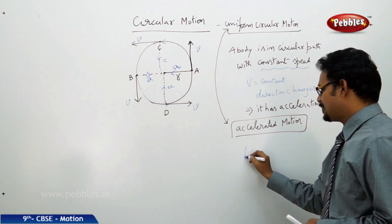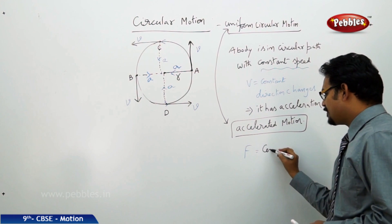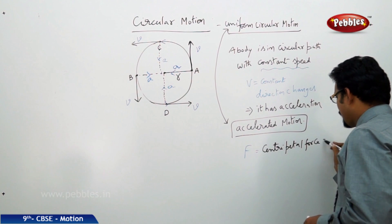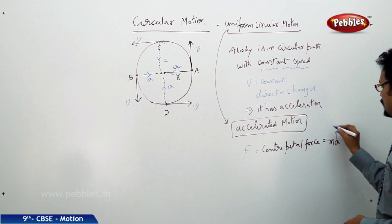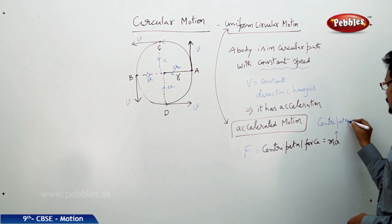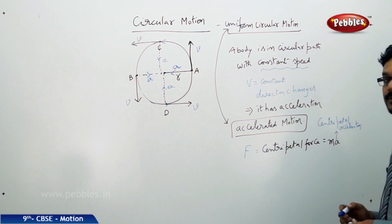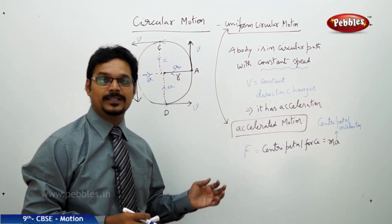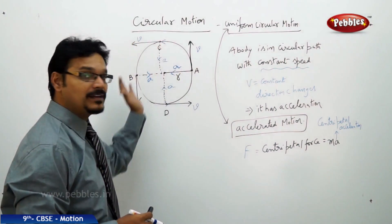The force acting towards the center is called centripetal force and it equals mass times acceleration. That is why this acceleration is called centripetal acceleration. This force is actually pulling the body along the circular path at each and every point on the circle, and that is why the body remains in the circular path.